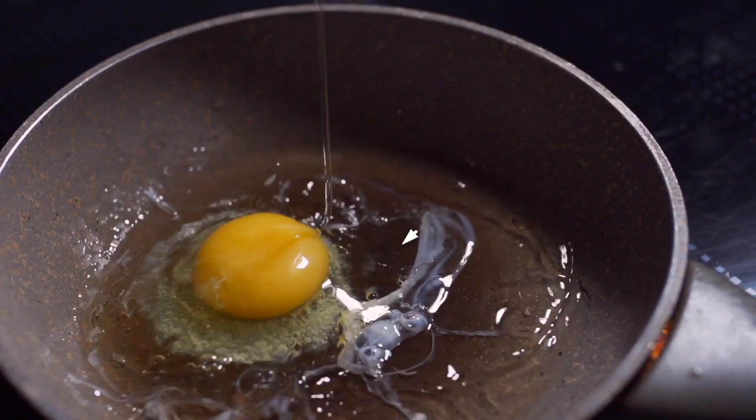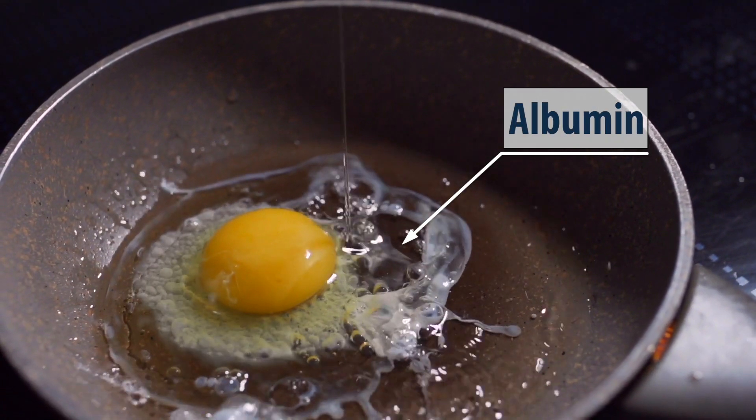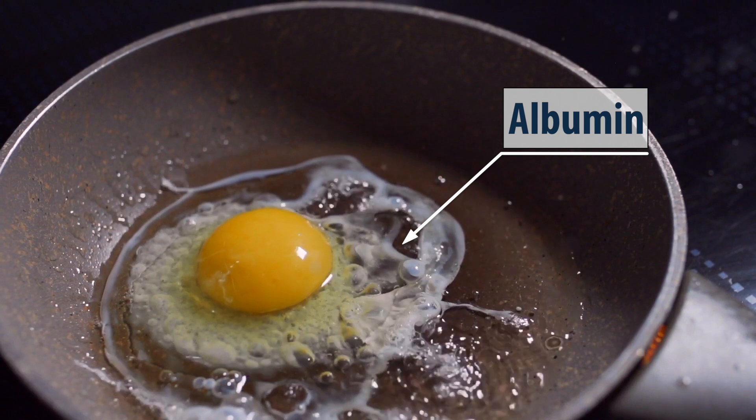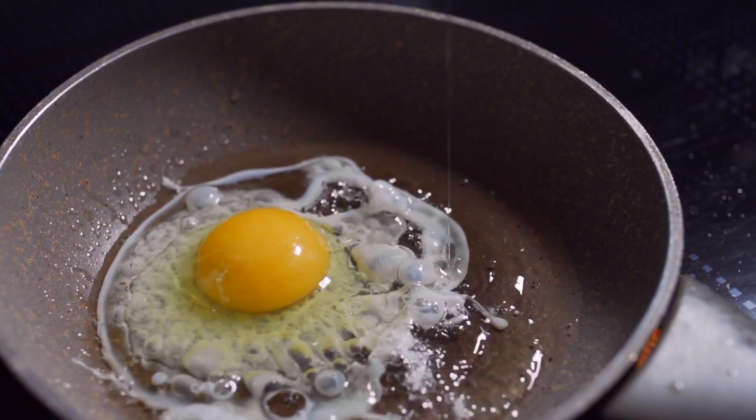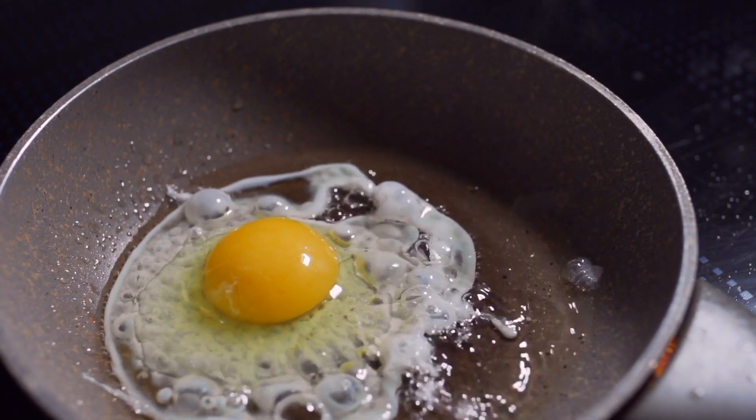Egg whites, or albumin, are mostly made of protein. Albumin is a clear, gooey substance. But when the albumin hits a hot frying pan, the heat causes the proteins to unfold. It turns white and becomes firm.